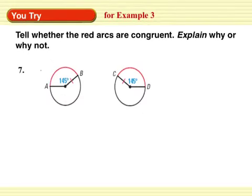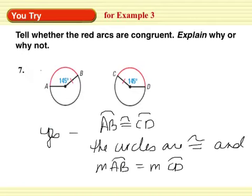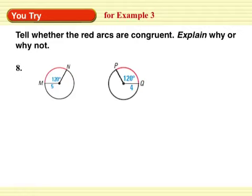You try. Tell whether the red arcs are congruent. Explain why or why not. Push pause. Yes, those red arcs are congruent. So I have arc AB is congruent to arc CD because the circles are congruent and the measurement of arc AB is equal to the measurement of arc CD.